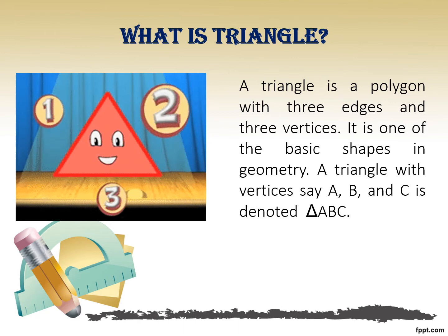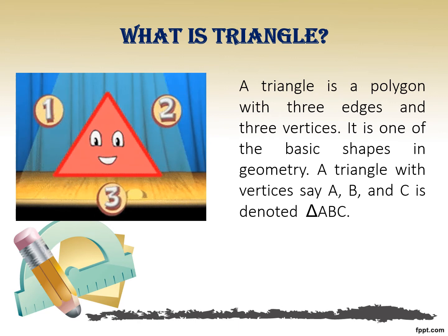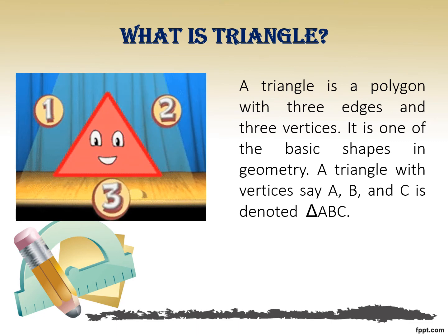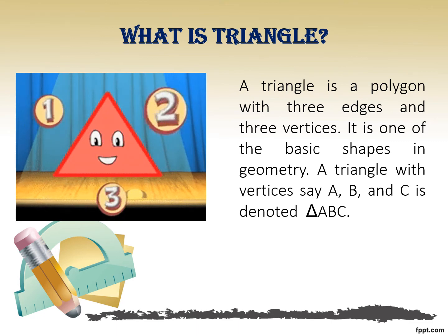In the image we can see we have a triangle which has three edges or three sides and it also has three vertices or three angles. So any closed polygon with three edges and three vertices is termed as a triangle.